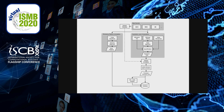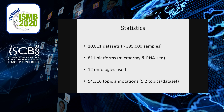I will mention some statistics of Gemma's data holdings. Currently, Gemma contains about 11,000 curated datasets, approximately 400,000 samples, and over 800 curated platforms, including both microarray and RNA sequencing. 12 ontologies are used during metadata annotation, for a total of over 54,000 topic annotations across datasets, with the average dataset having about 5 topic annotations.